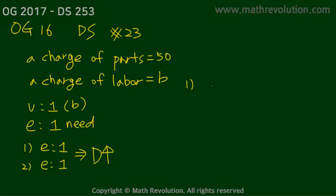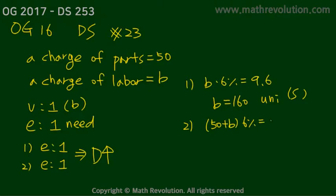Looking at condition 1, it states B times 6% equals $9.60. So B equals 160, the answer is unique, and the condition is sufficient. Condition 2 states 50 plus B times 6% equals 12.60. So B equals 160, the answer is unique, and the condition is sufficient. Since conditions 1 and 2 are the same, the correct answer choice is D.